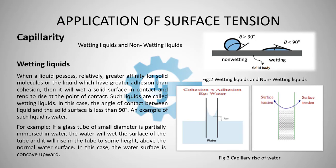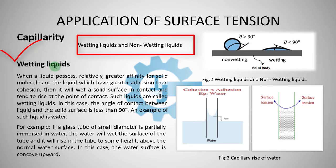Before going into the details of capillarity, we have to understand about wetting liquids and non-wetting liquids. When a liquid possesses relatively greater affinity for solid molecules, or the liquid which has greater adhesion than cohesion, it will wet a solid surface in contact and tend to rise at the point of contact. Such liquids are called wetting liquids. In this case, the angle of contact between the liquid and the solid surface is less than 90 degrees.